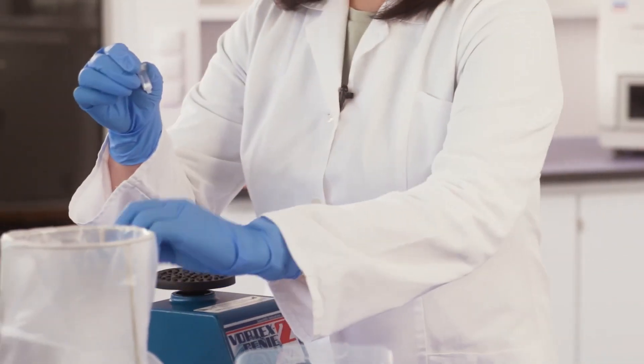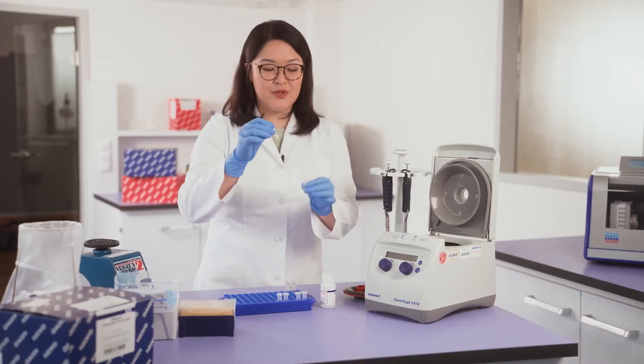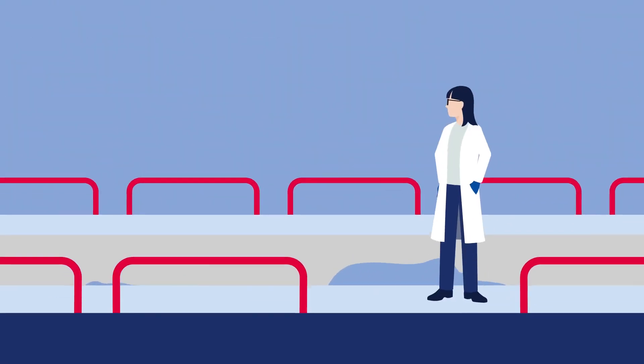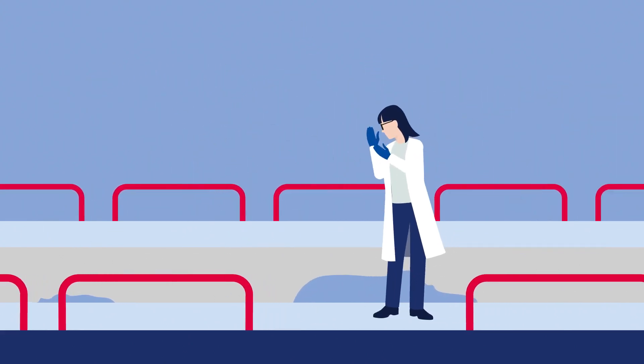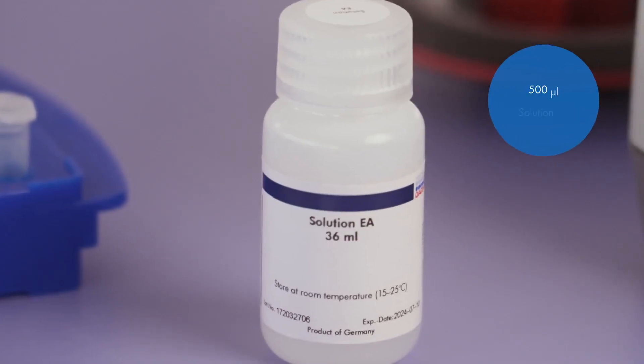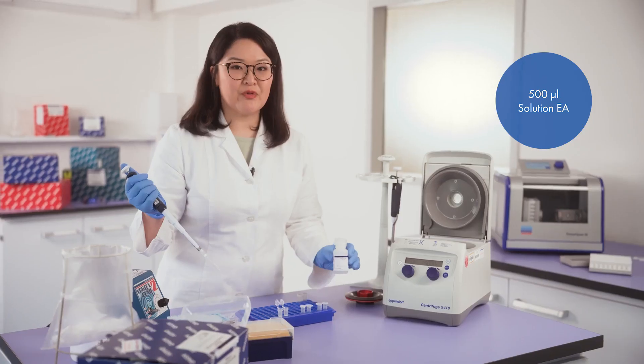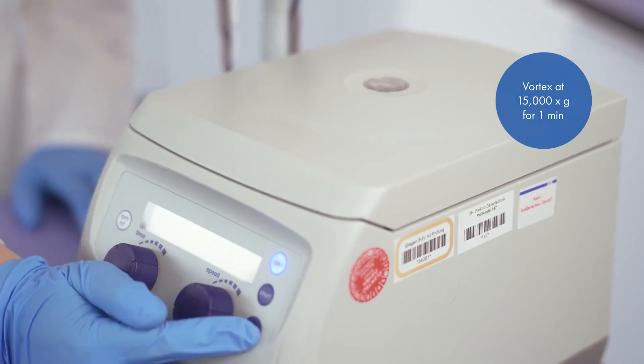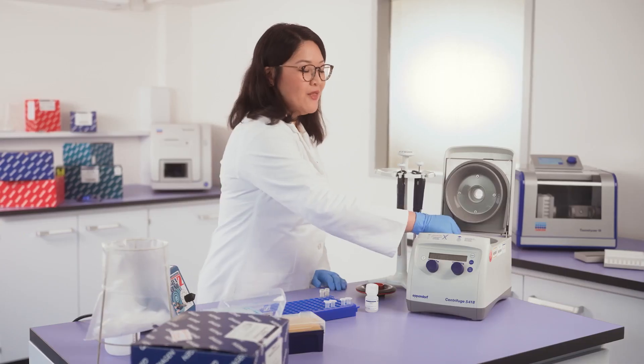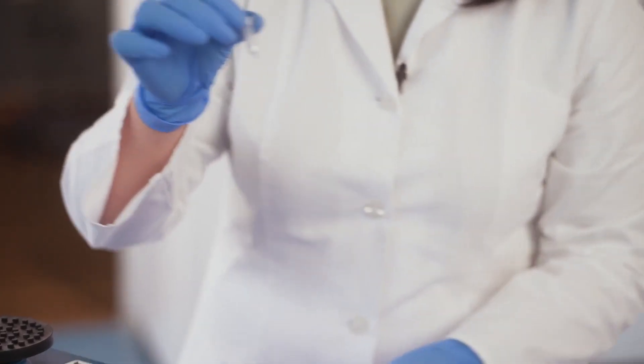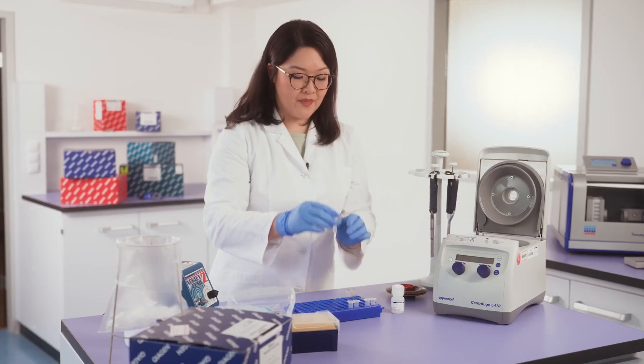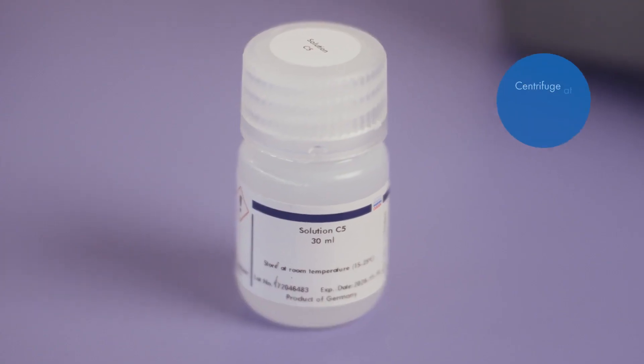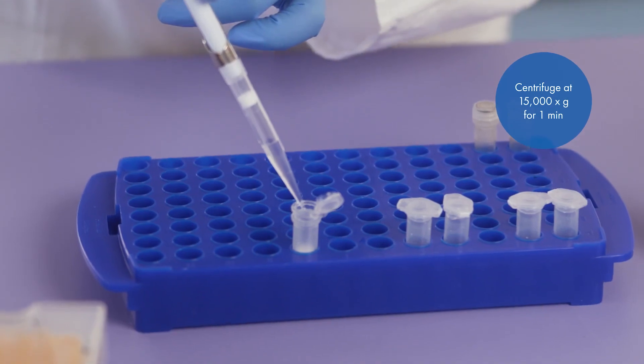After the second centrifugation step, discard the flow-through and put the MB spin column onto a new collection tube. Make sure to not splash the flow-through on the MB spin. Now add solution EA to remove proteins and other non-aqueous contaminants. Discard the flow-through and put the MB spin column onto the collection tube.